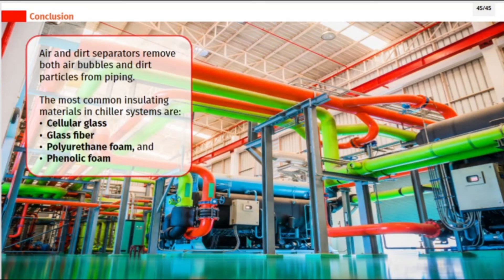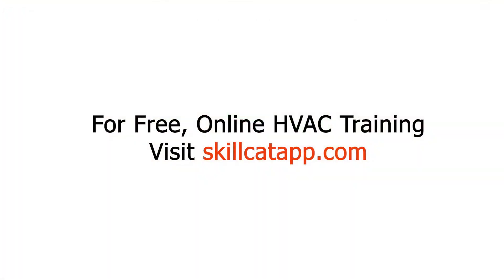Air and dirt separators remove both air bubbles and dirt particles from piping. The most common insulating materials in chiller systems are cellular glass, glass fiber, polyurethane foam, and phenolic foam.